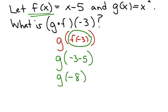So you get negative 3 minus 5, which is negative 8. Well, now you're left with g of negative 8. So that says plug that into the g equation. So you get negative 8 squared, which is 64.